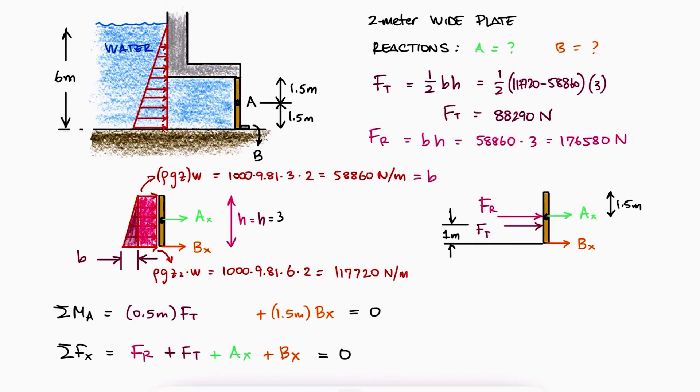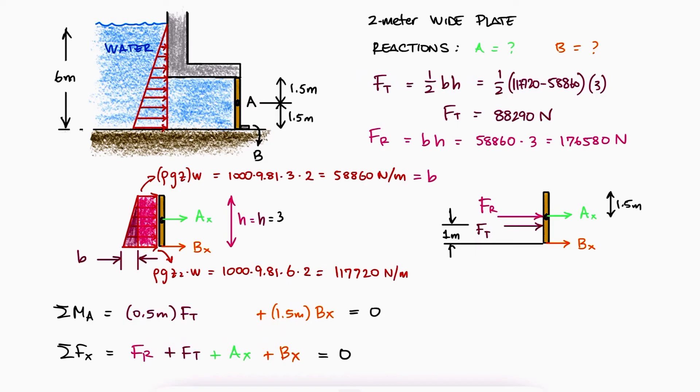We substitute the Ft value in the sum of moments equation to solve for the reaction at B and substitute all values in the sum of forces in x to solve for the reaction at A. Of course, both reactions are pointing towards the left.